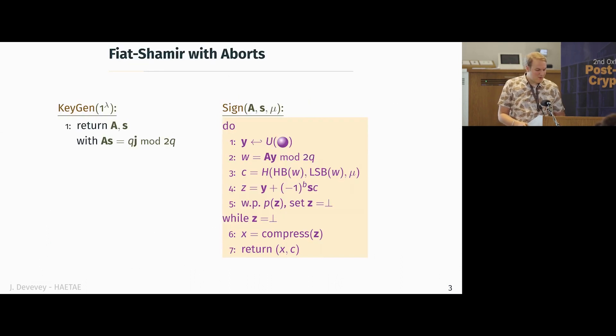All right. So now what I want to do is try to break down our scheme into small little pieces and try to explain at each step what's the difference with what Dilithium was doing or what's similar. My first piece is actually the whole scheme, because I want to do some recap on the Fiat-Shamir with aborts paradigm in Euclidean lattices.